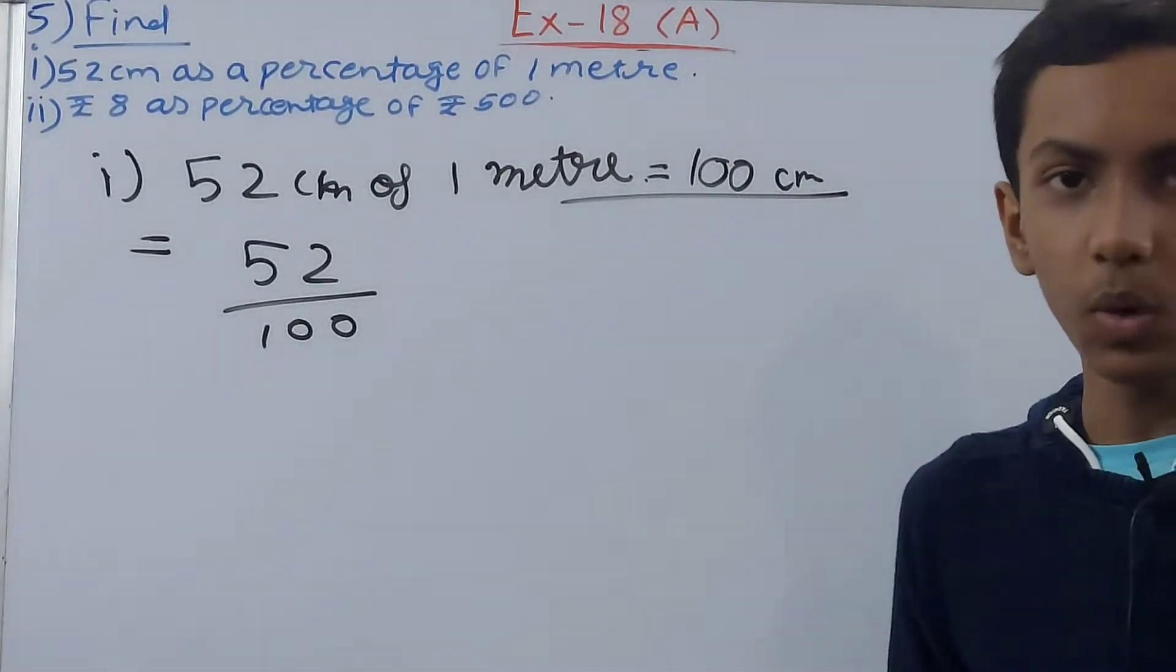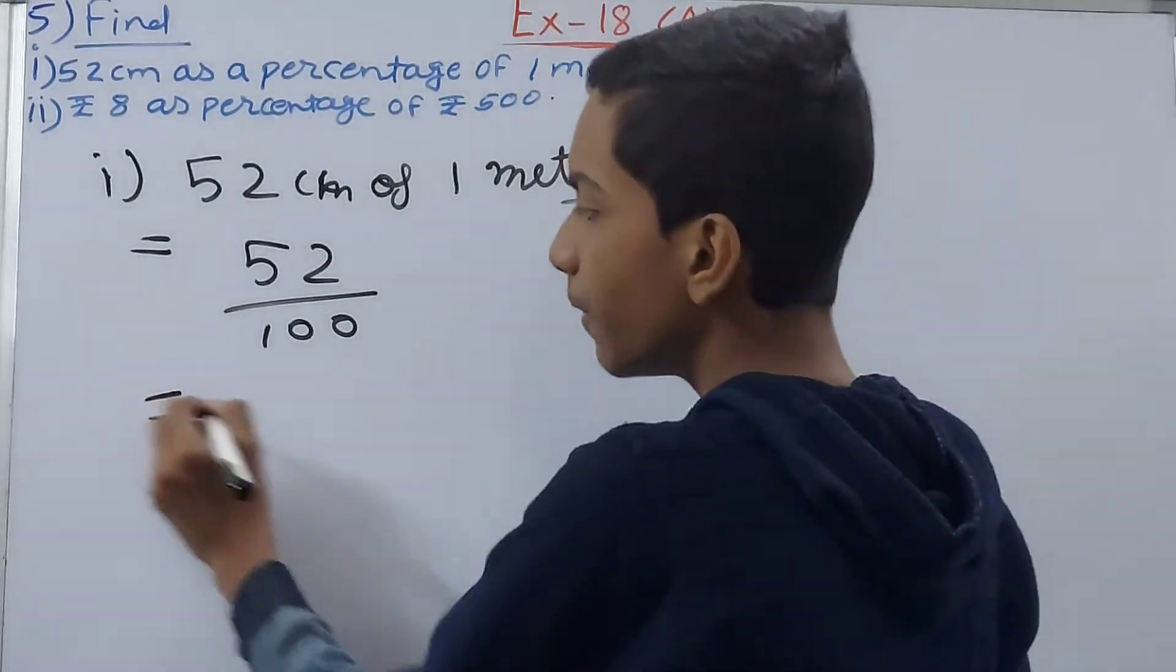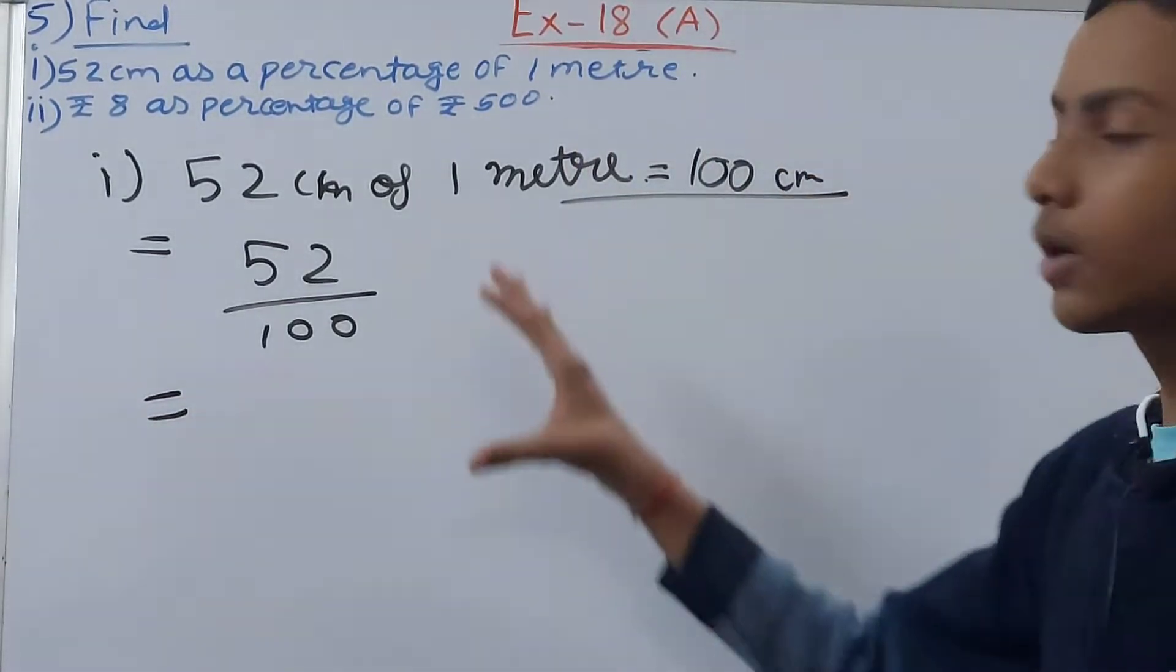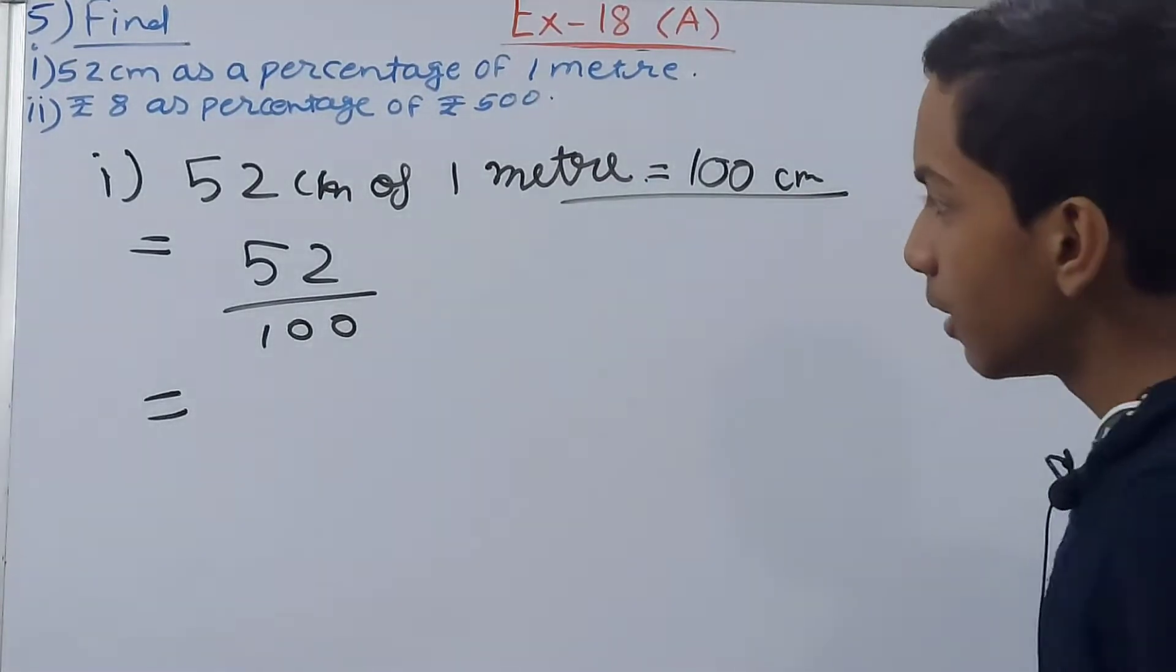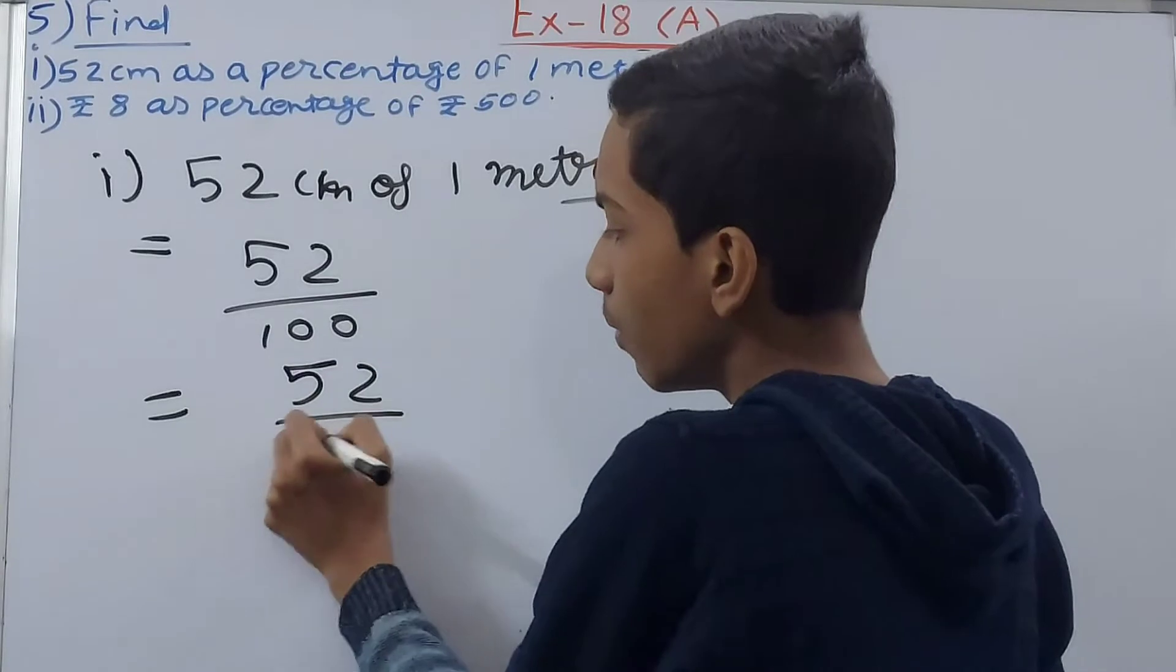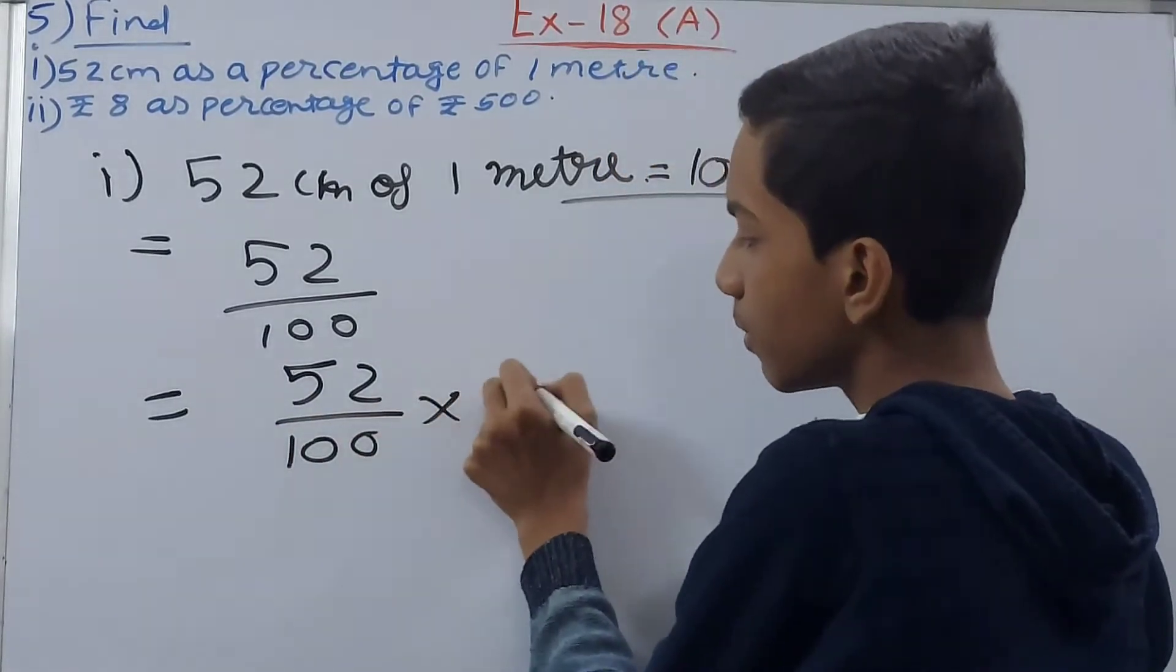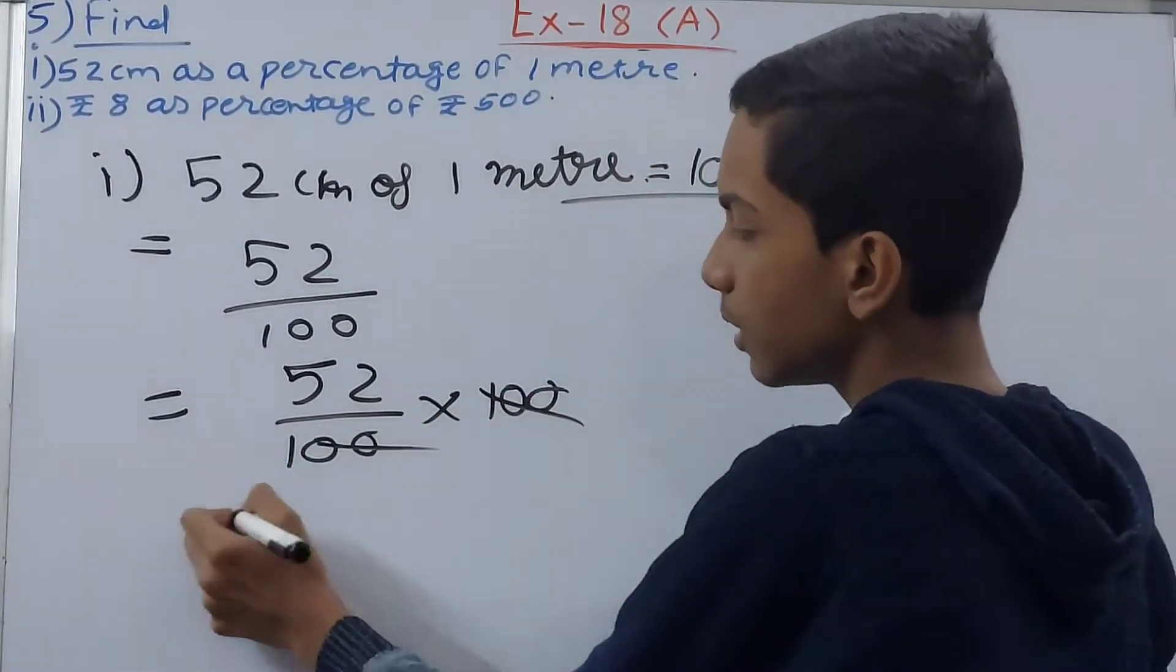For finding percentage or for converting fraction to percentage, what we do is multiply by 100. So multiply 52 upon 100 by 100. Cut this, cut this, so you get here 52 percent. This becomes our answer.